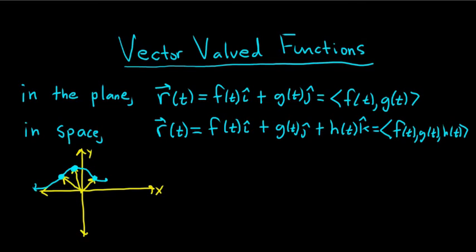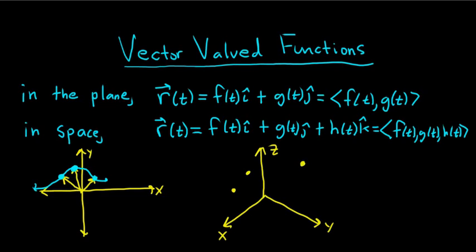In 3D space, we would have a three-dimensional graph with a z-axis, x-axis, and y-axis. We would have multiple vectors, and the endpoints of those vectors would be traced out by a curve — shown here by a purple line. So it's the same in both cases, except in 3D space, you have that third coordinate.